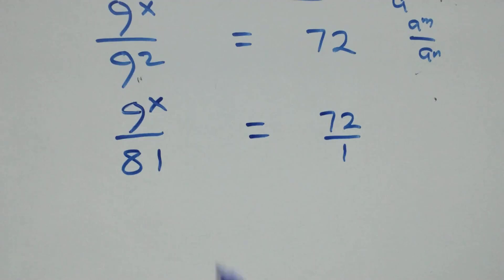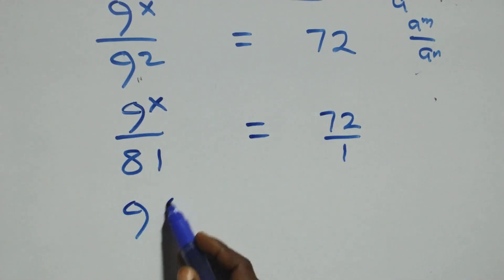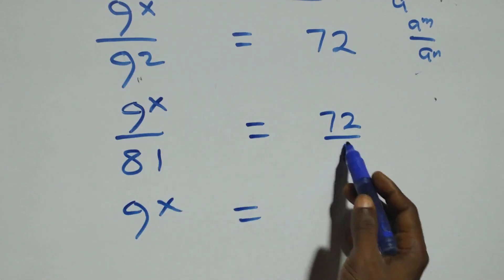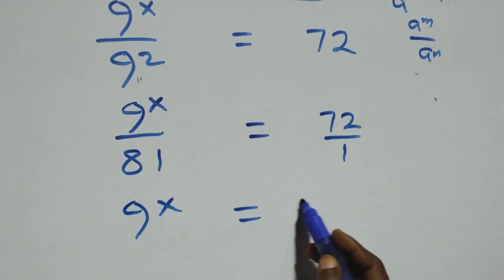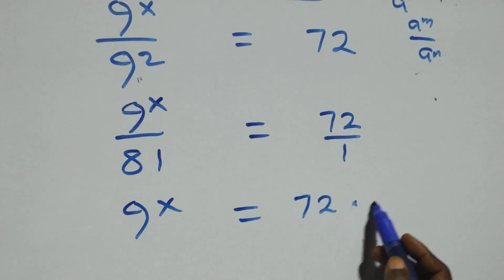We cross multiply: 9 raised to power x times 1, which is the same thing as 9 raised to power x, equals 72 times 81.